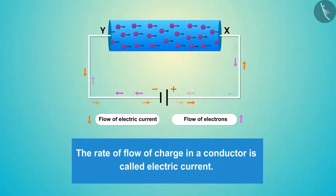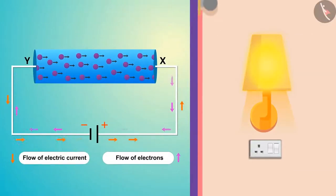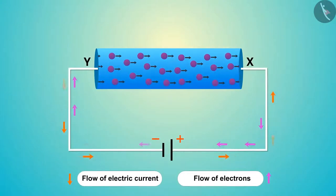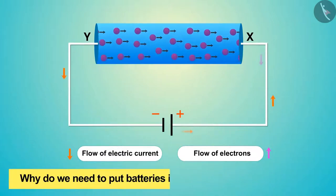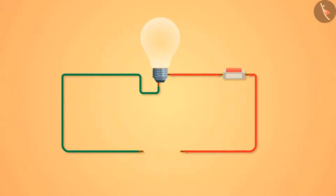The rate of flow of charge in a conductor is called electric current. This is the electric current that lights the bulb. We know that charge is always present in metallic wires. So why do we need to put batteries in the circuit for the bulb to glow? Why is it necessary to put the battery?